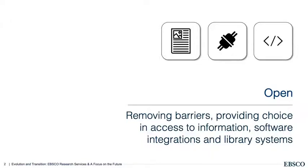I wanted to start with gaining a common understanding of what we mean by Open. As we look at Open, we consider how we can best remove barriers to how information is accessed, how software can be better integrated within the technology infrastructure of libraries, and how we can best enable more input in how library systems are developed and supported. It comes down to more choice for libraries in how to enable better access to information and better services for users. Today we're talking about how we at EBSCO are working to remove barriers and provide choice, working with libraries worldwide as we develop our suite of products and services.